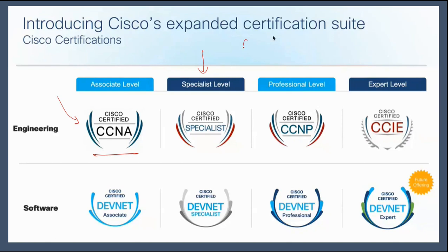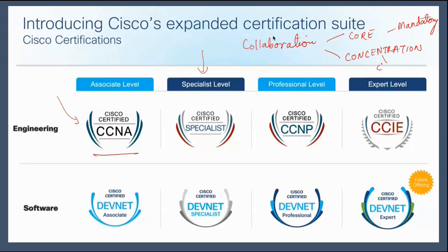From the specialist and professional level, you can choose the track. In collaboration, we have core and concentration. Every CCNP level — whether it's collaboration, wireless, enterprise, or any track — has two main exams: core and concentration. Core is mandatory to become CCNP certified and you can choose any one concentration. Once you pass one core and one concentration exam, you get CCNP certified. If you pass any one of these — a core exam or any one concentration exam — you get a specialist level certificate for that particular exam.